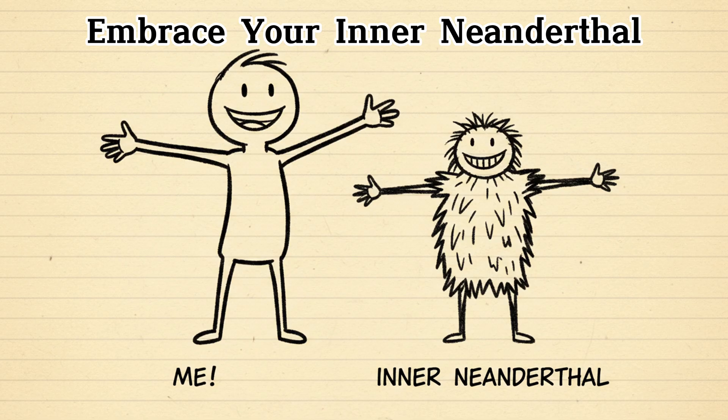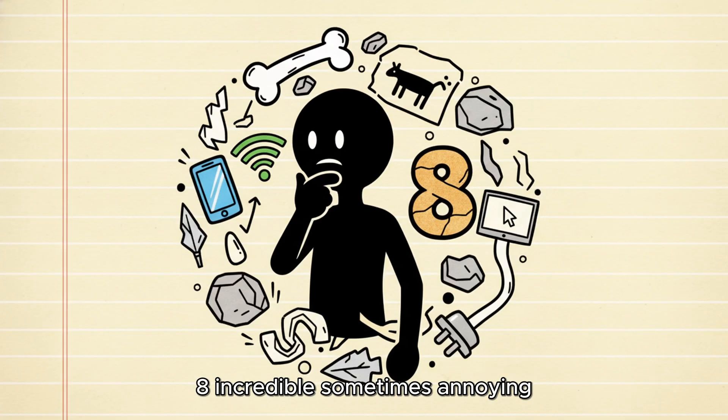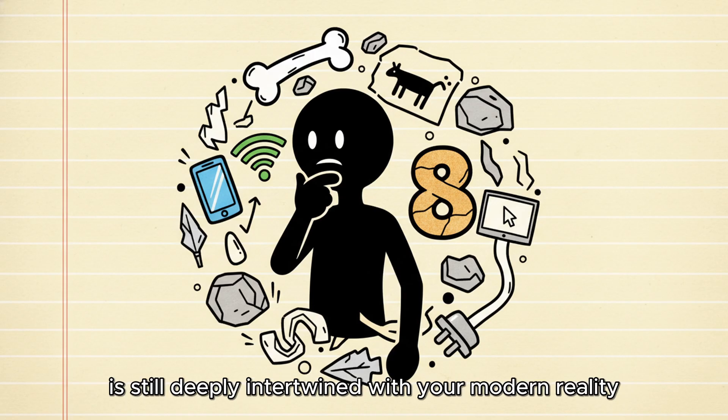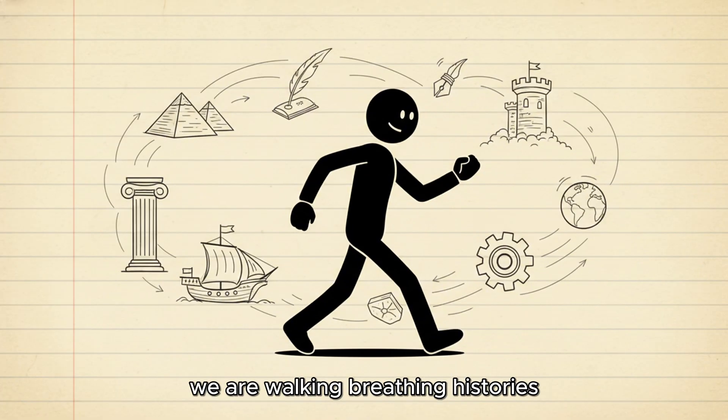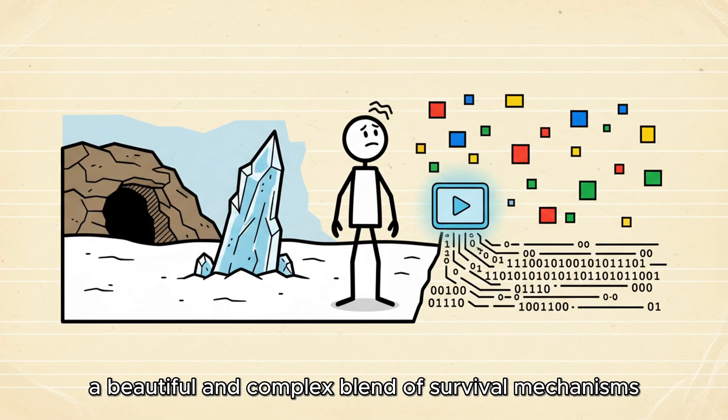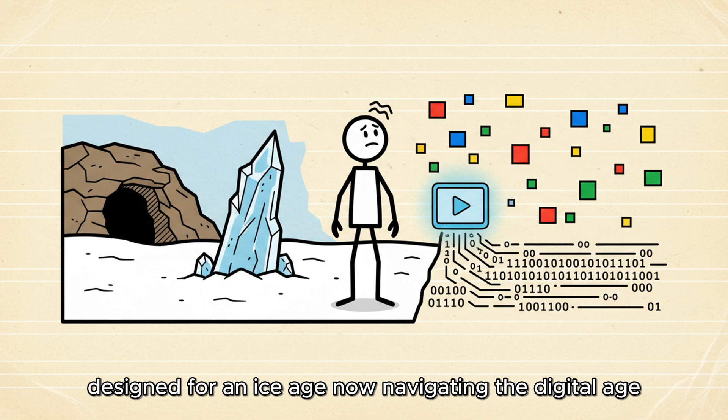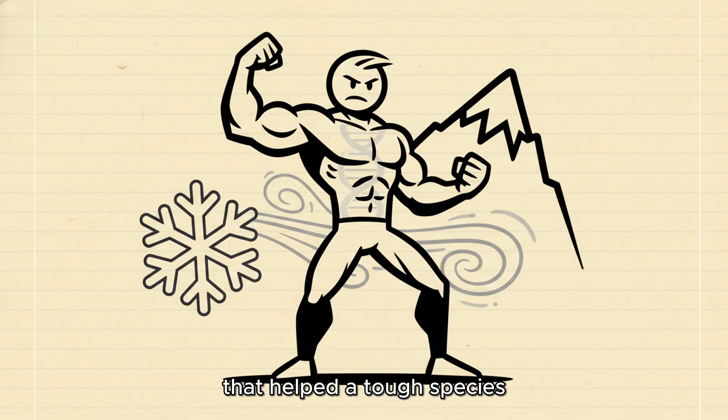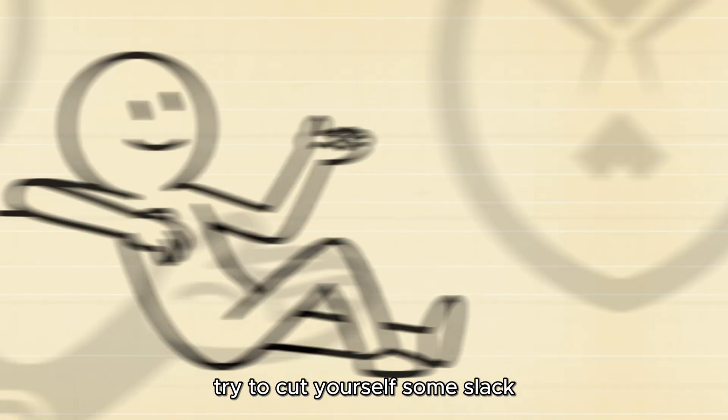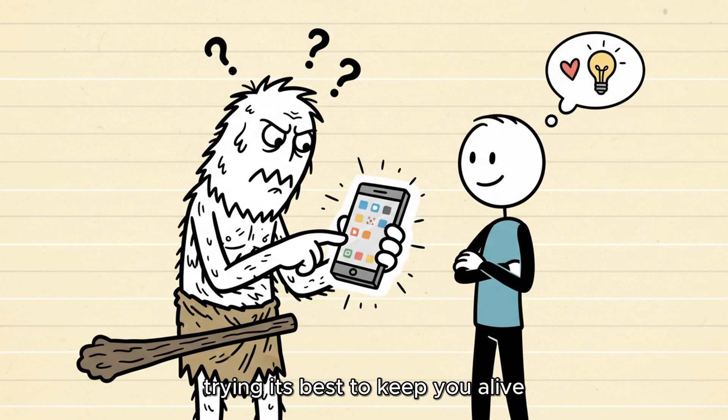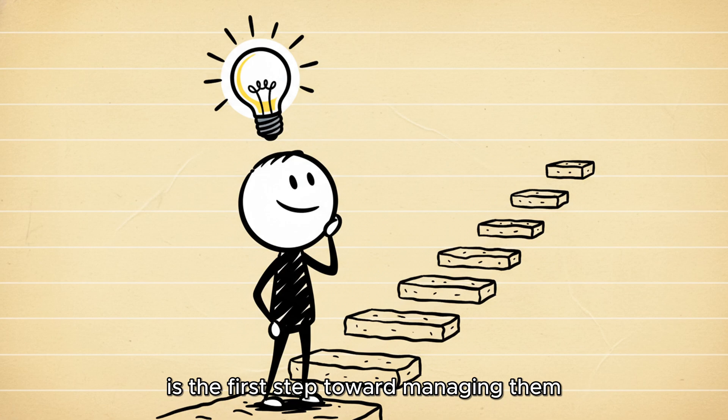Embrace your inner Neanderthal. So, there you have it. Eight incredible, sometimes annoying, ways your ancient past is still deeply intertwined with your modern reality. We are not finished products of evolution. We are walking, breathing histories, a beautiful and complex blend of survival mechanisms designed for an ice age now navigating the digital age. You are carrying genetic code that helped a tough species survive in the most brutal conditions on Earth. Next time you're wrestling with a bad habit, suffering from an inexplicable anxiety, or cursing your chicken skin, try to cut yourself some slack. It's not a flaw. It's an echo. It's your inner caveman trying its best to keep you alive in a world it was never built for. Understanding these traits is the first step toward managing them.